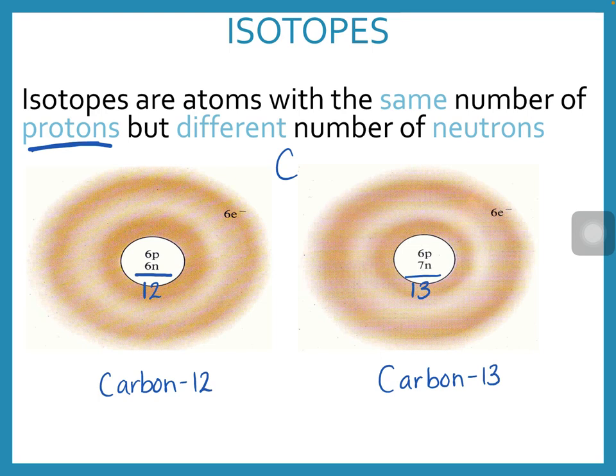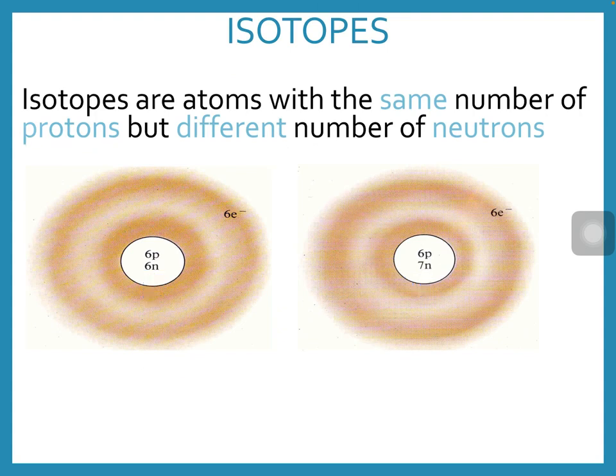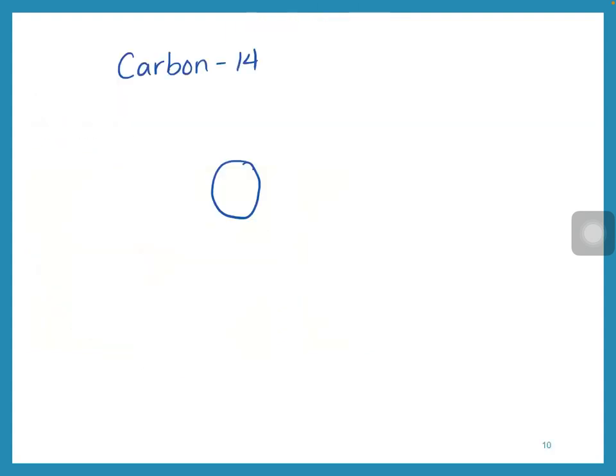There's another isotope of carbon that exists as well, which is carbon-14. When I look at carbon-14, if I wanted to know how many neutrons it has, I look at the nucleus. To be carbon, it has to have six protons, otherwise it's a different element.